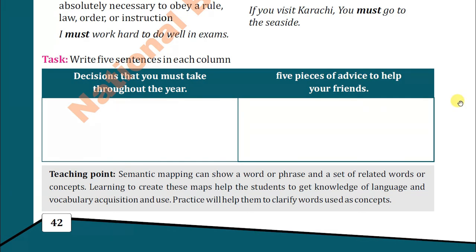For example, for the first column — rules you must follow throughout the year: 'You must obey traffic laws,' 'You must obey classroom rules,' 'You must work hard,' 'You must speak the truth,' 'You must be honest in all situations.' These are just examples — you can make your own sentences. Write sentences like these in the first column.